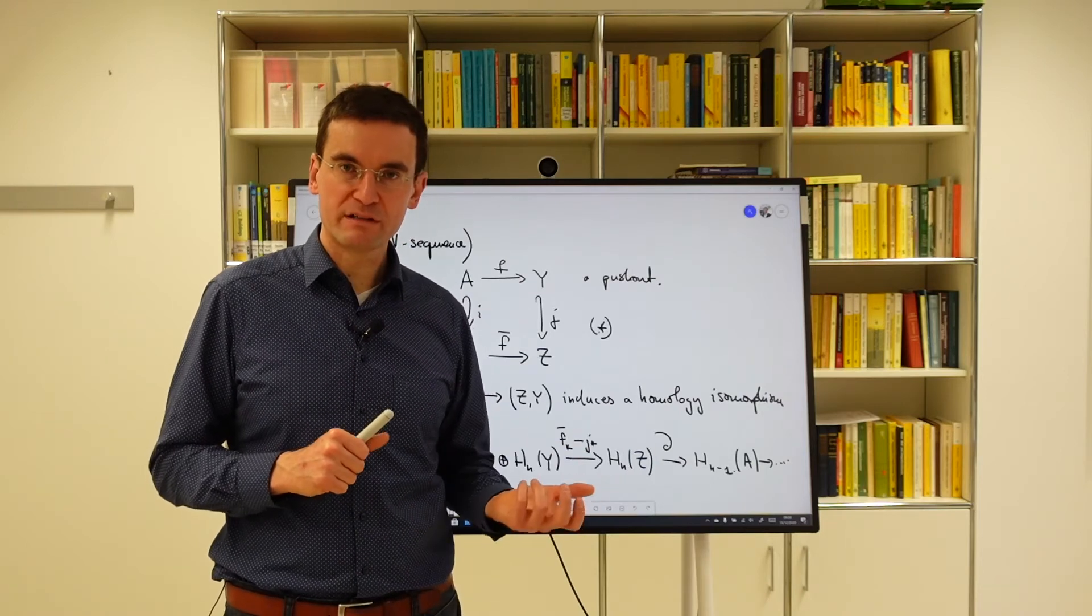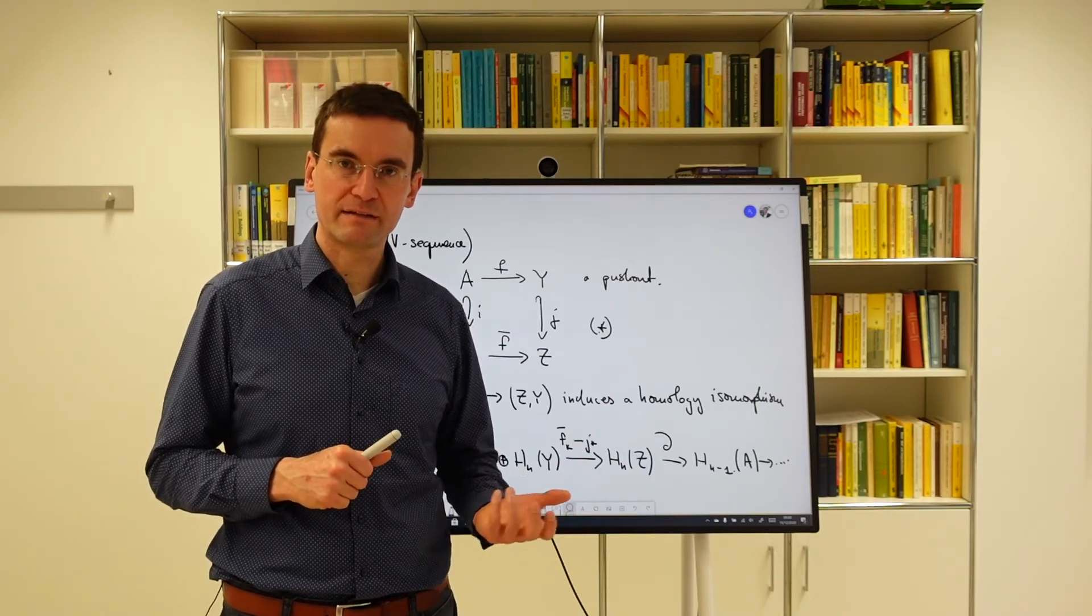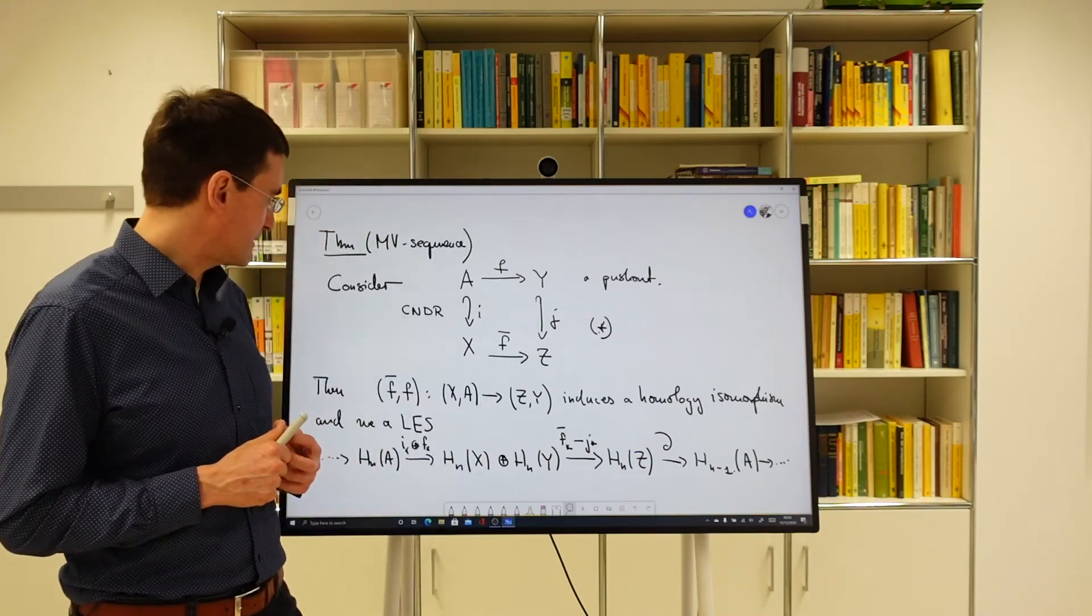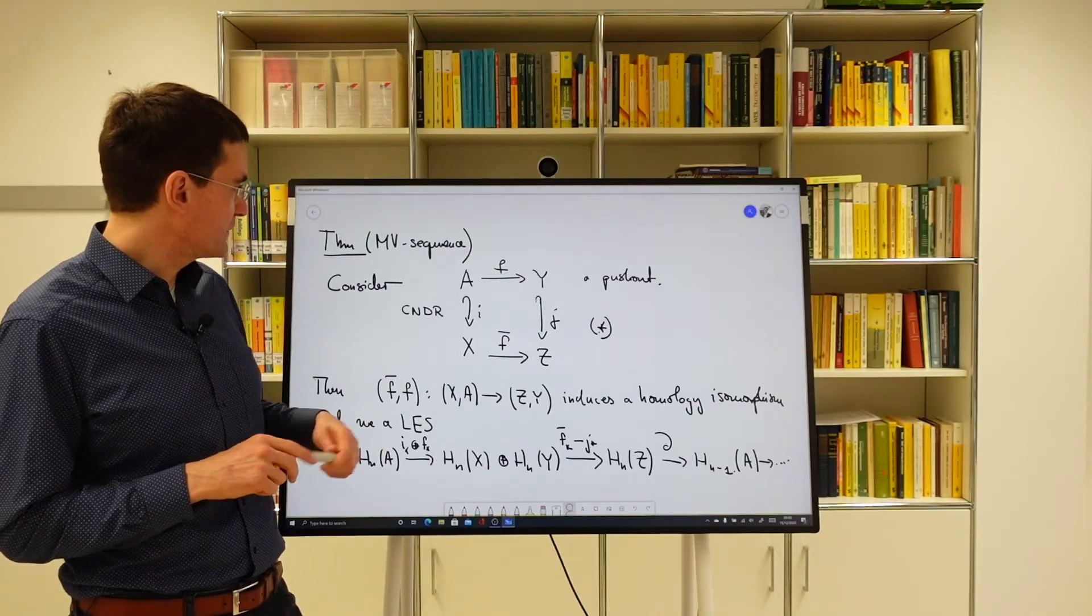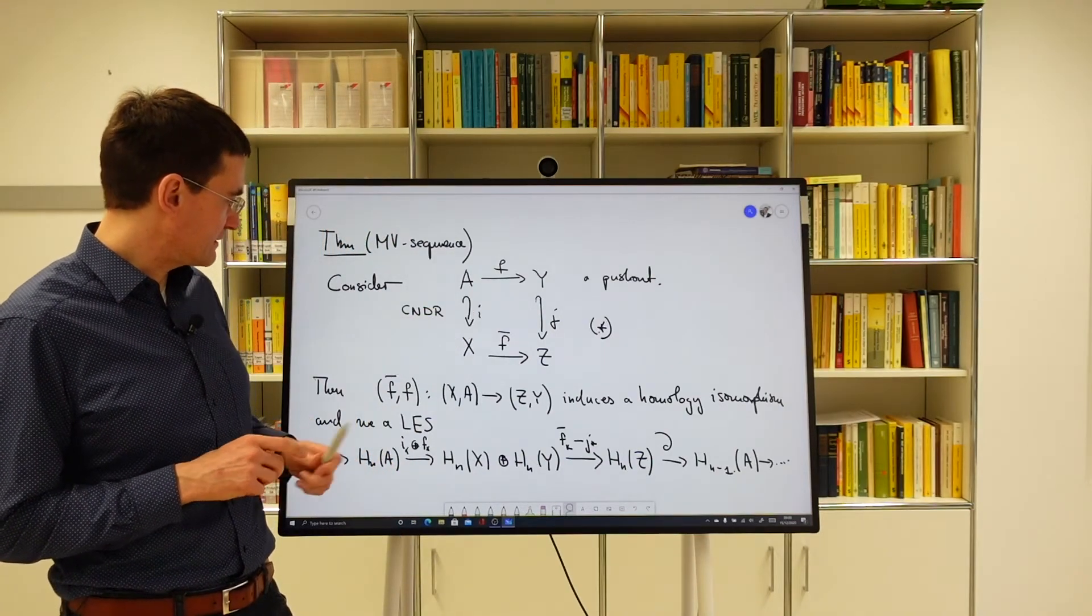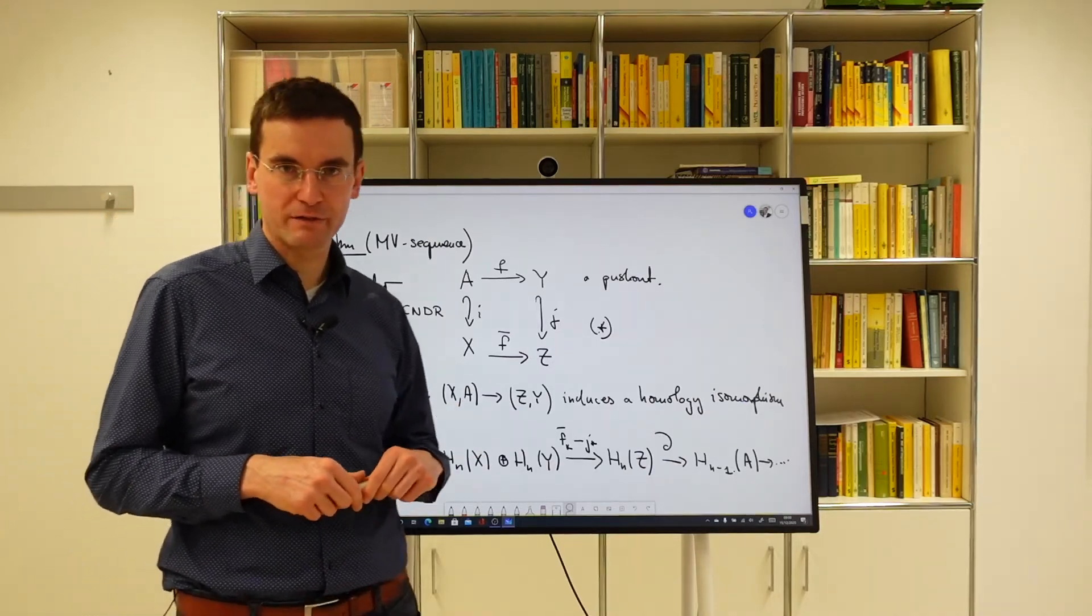We had before in the case, in the absolute case. And you see that you never have to use that F is an inclusion. The only fact that you have to use is that this is a homology isomorphism.